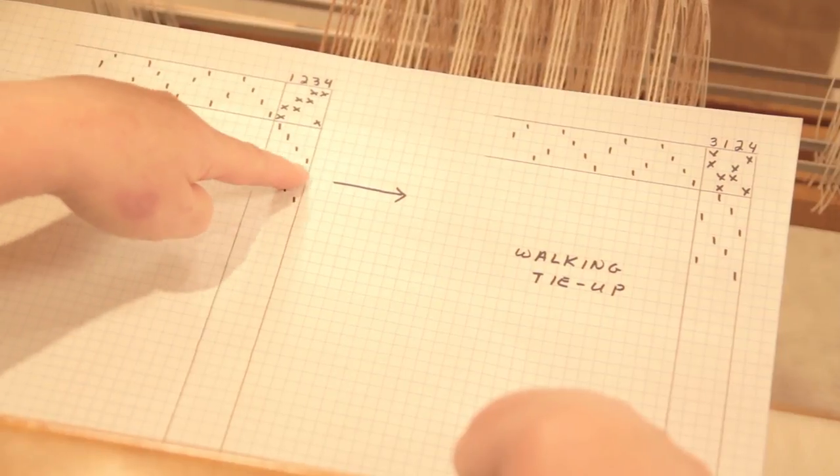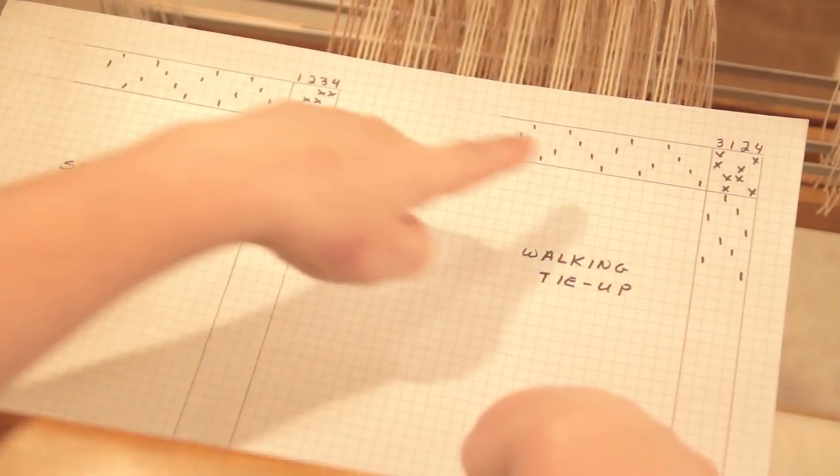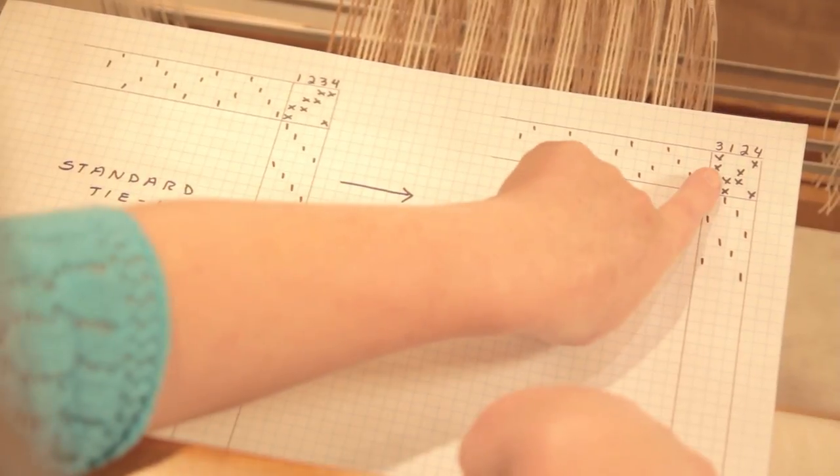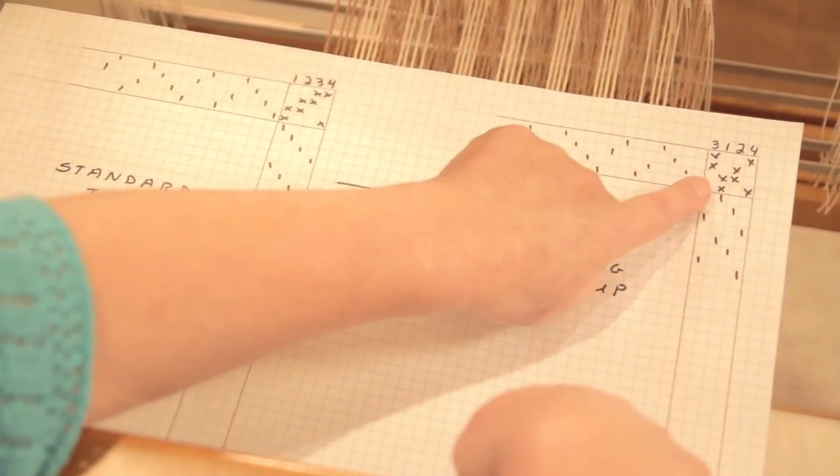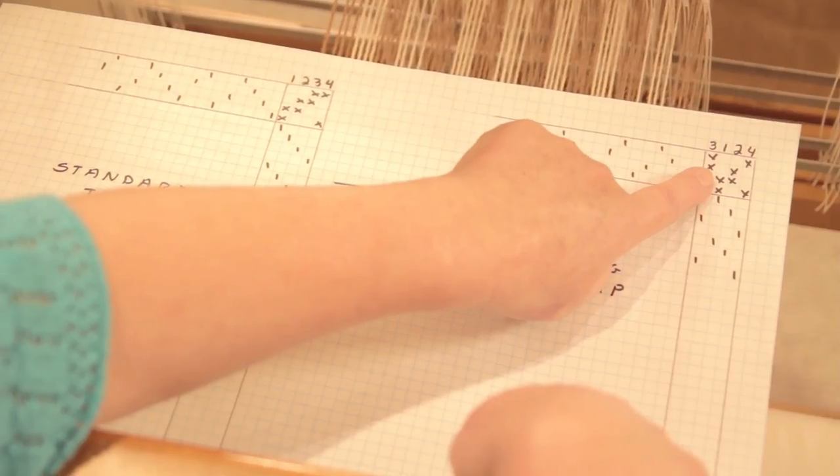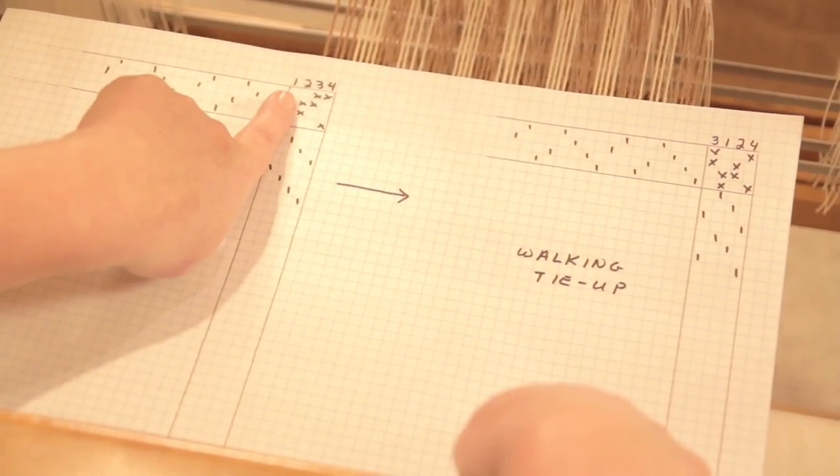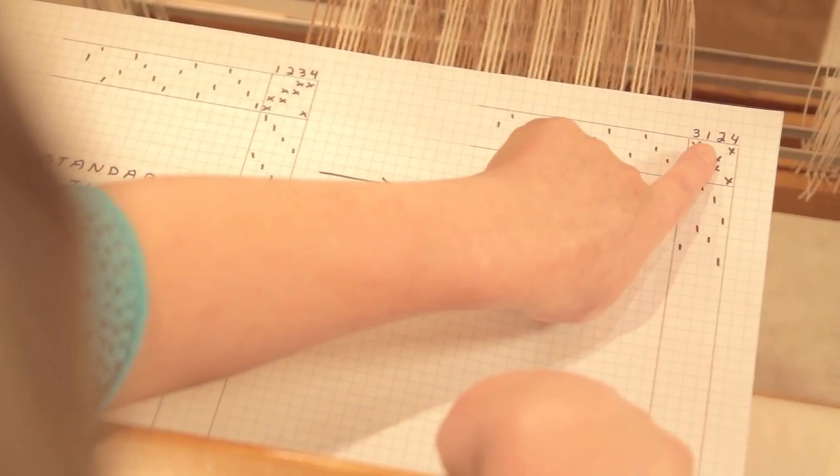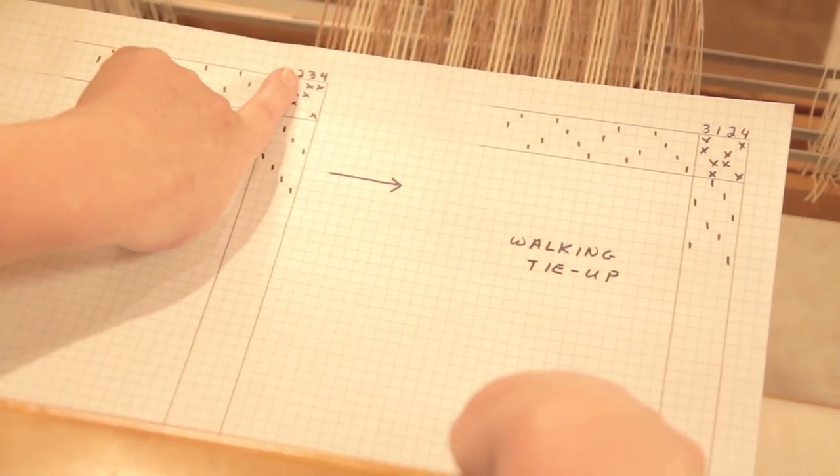is I have moved the treadles around which makes this treadling part of it very confusing to look at visually. Not nearly as easy to see as it is here. But what I have done is I have moved treadle one from here into a new position here and it is still labeled treadle one and it is attached to shafts one and two.